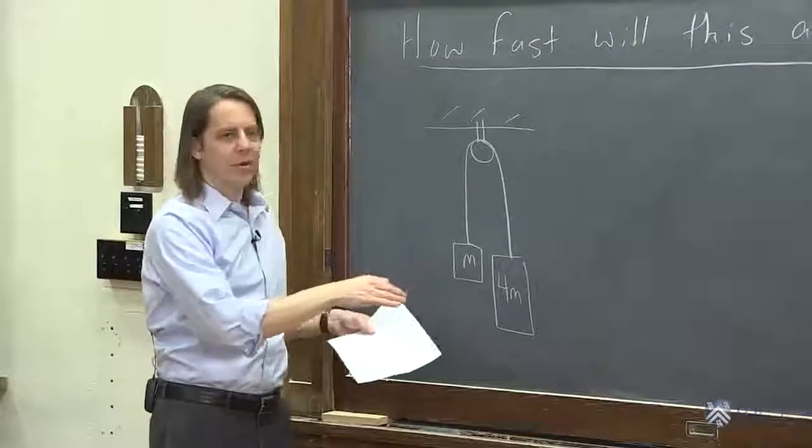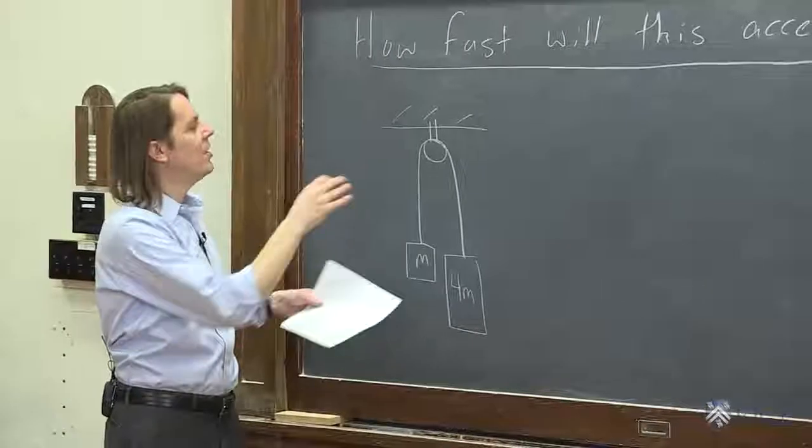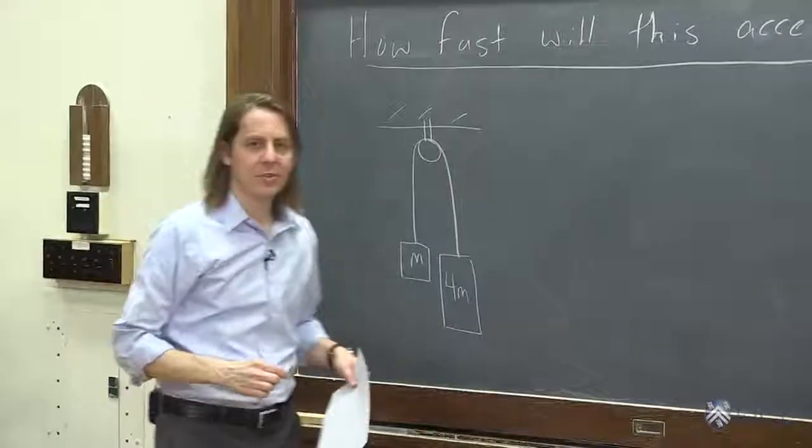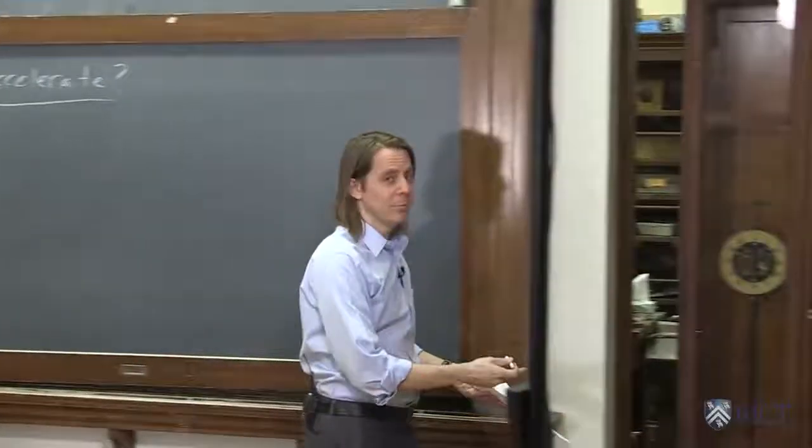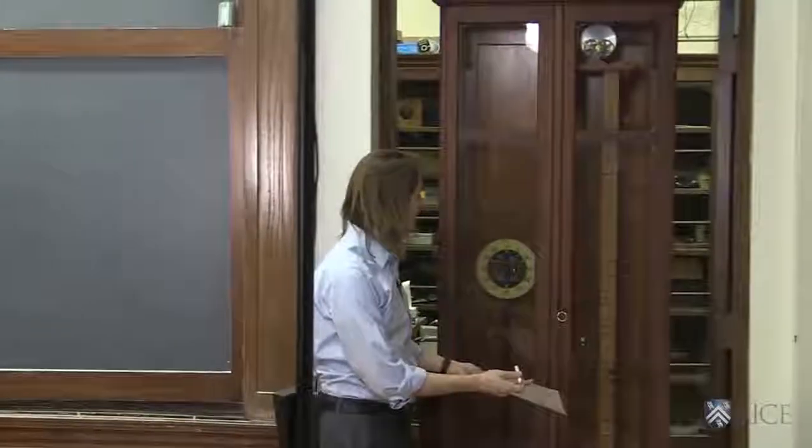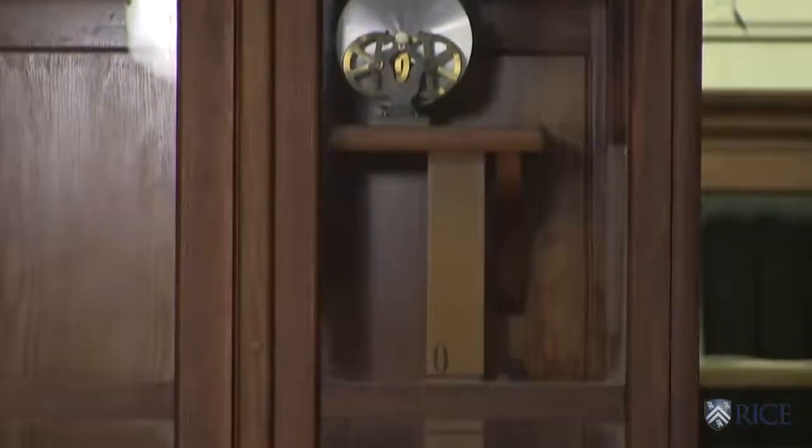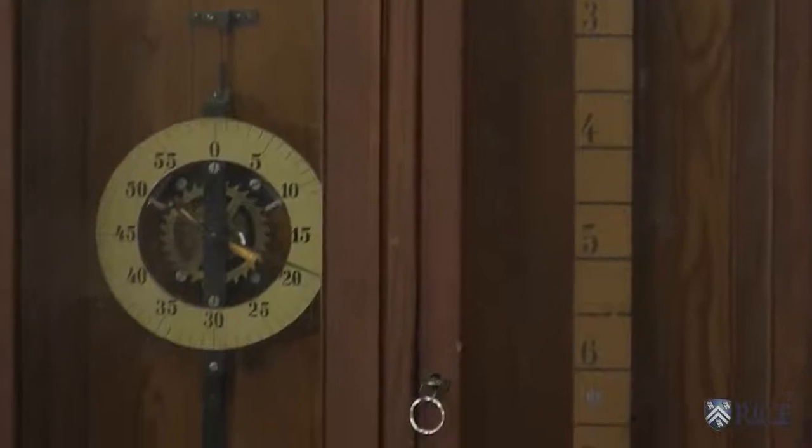Setups like this are called an Atwood machine. This was used for early studies of kinematics and measurements of the acceleration due to gravity, and we have a very cool Atwood machine. So here is our department's Atwood machine. Very old, probably about as old as the building, but I can't really use it as a demo, unfortunately, for two reasons.